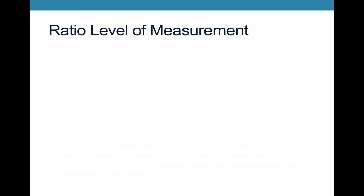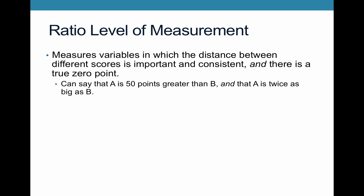The final level of measurement is called a ratio. A ratio measure is one where the distance between different scores is important and consistent — the same as interval — but there's also a true zero point, and that's how it differs from interval. So you can say that A is 50 points greater than B, and you can also say that A is twice as big or three times as big as B, because it has a meaningful zero point.